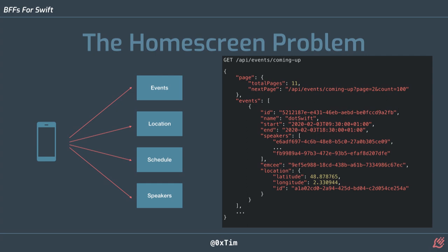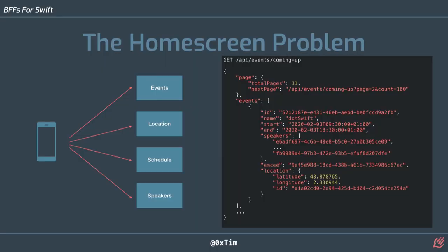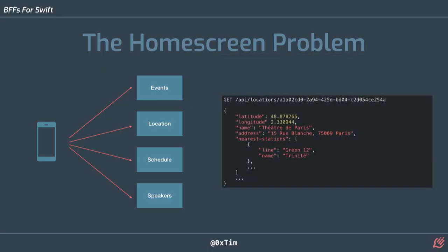We make a request to our events endpoint, which gives us pagination information so we can keep scrolling. But it's returning a hundred events because that works on web — on mobile we're only going to show two or three at a time, so we're downloading events we're not going to use. The events array has loads of information every client might ever want, including a list of speakers we won't use, dates, and a location with latitude and longitude because the web client has a map. On the iOS app we probably won't show that until the detail screen. Making a request to the location API gives us the name and address we actually want, but we're also pulling down nearest stations, public transport information — all this information we don't need.